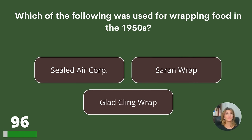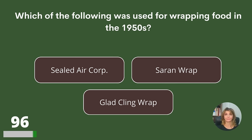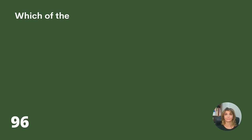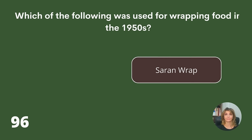Which of the following was used for wrapping food in the 1950s? Sealed Air Core, Saran Wrap, or Glad Cling Wrap? Answer: Saran Wrap.